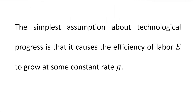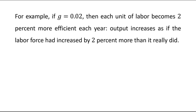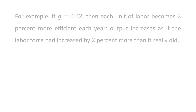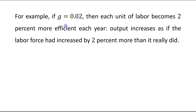The simplest assumption about technological progress is that it causes the efficiency of labor E to grow at some constant rate G. For example, if G equals 0.02, then each unit of labor becomes 2% more efficient each year.